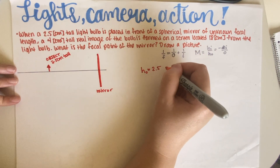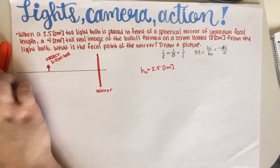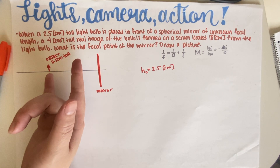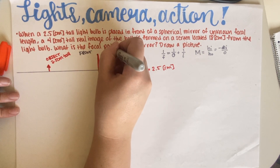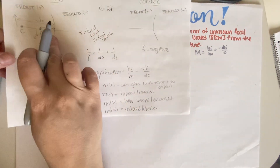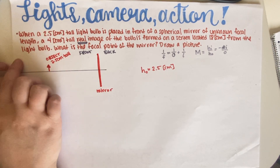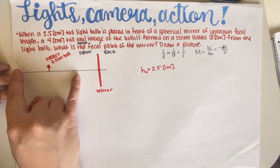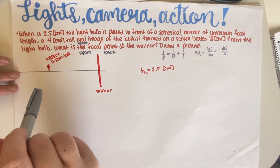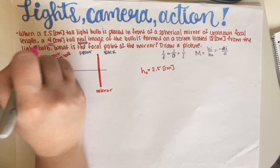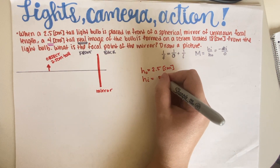The object is 2.5 centimeters tall, so the height of the object is 2.5 centimeters. Then there is a screen 18 centimeters away — but is it behind or in front? First of all it has to be on the front of the mirror, because it makes a real image, and whenever you have a mirror, if your image is real it is on the same side as the reflective side. So the screen is in front of the mirror. Looking at the image height, it's 4 centimeters.